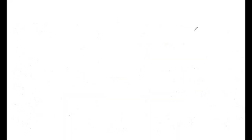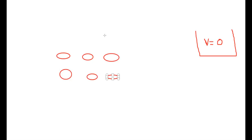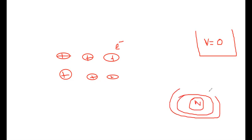Inside the box, we assumed a constant zero potential. But if you draw atoms in the material, you see there are atoms present. We said the electrons move freely with no effect from positive ions. If you take any metal atom — it has a nucleus and shells with electrons — the outermost electron in a metal is loosely bound. It leaves its place, and that atom becomes a positive ion.